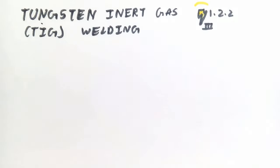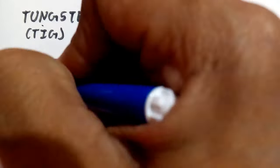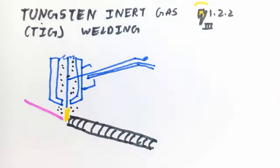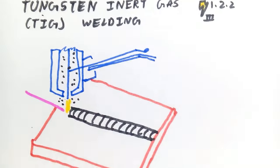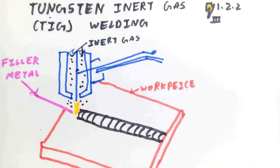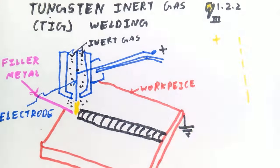Second comes tungsten inert gas welding or TIG welding. It is an arc welding process where coalescence is produced by heating the workpiece with an electric arc struck between tungsten electrode and workpiece. Advantages include better control on welding process with a drawback of high cost equipment.